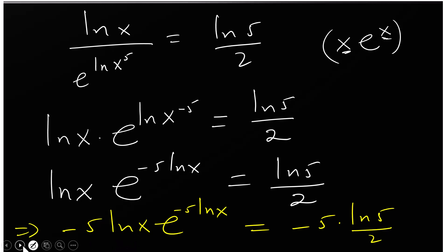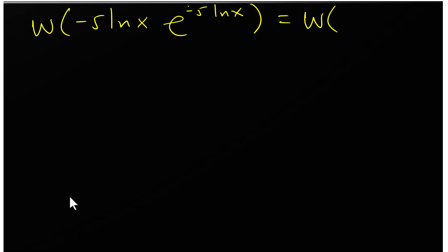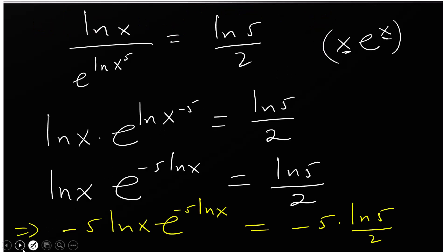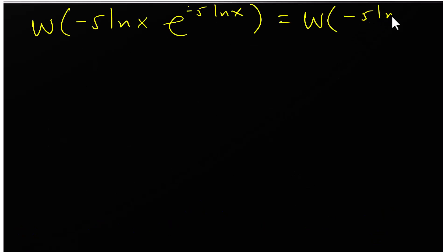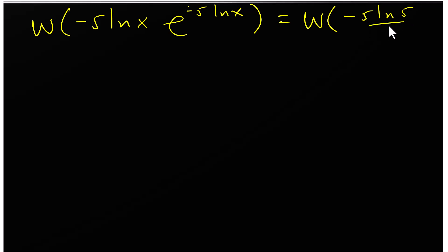Now both sides match the required form, so we can apply the Lambert W function. Taking the W function of both sides: W of negative 5 ln(x) times e raised to minus 5 ln(x) equals W of negative 5 ln(5) over 2. This simplifies to: minus 5 ln(x) equals W of negative 5 ln(5) over 2.